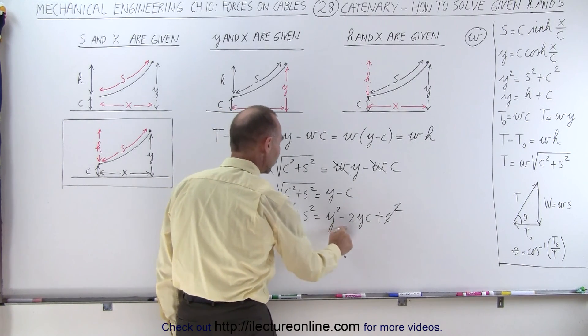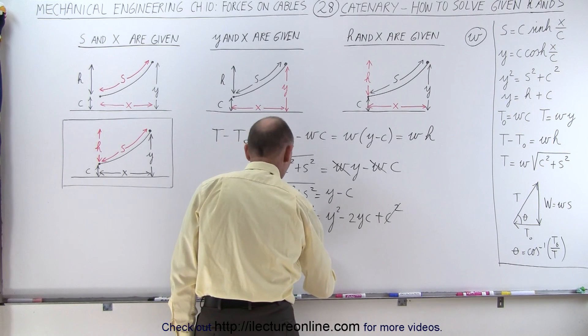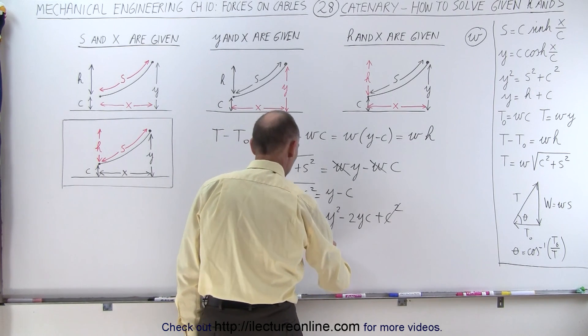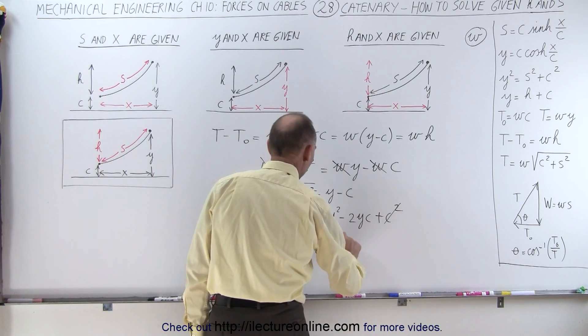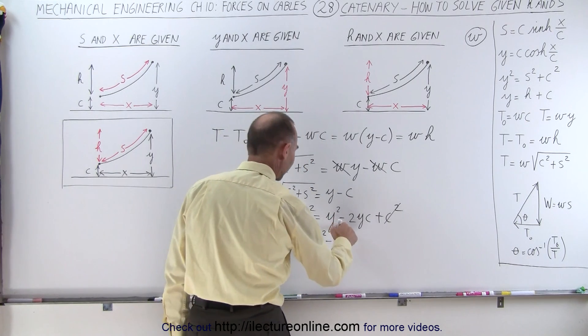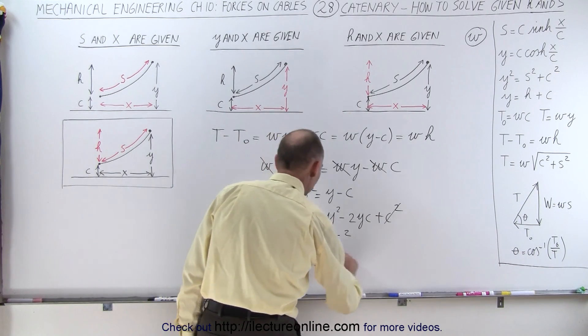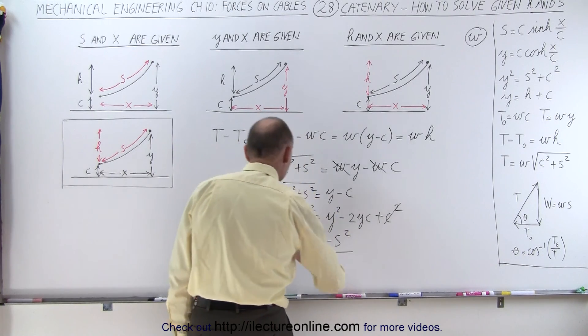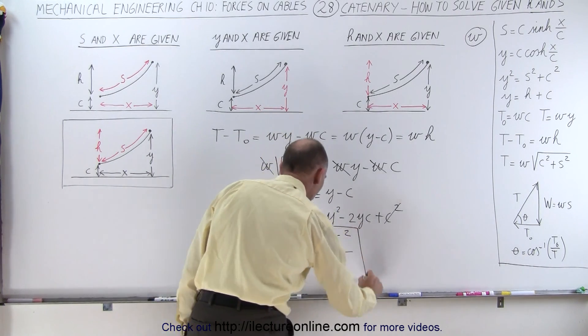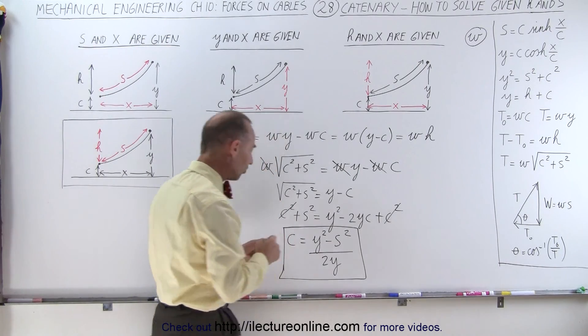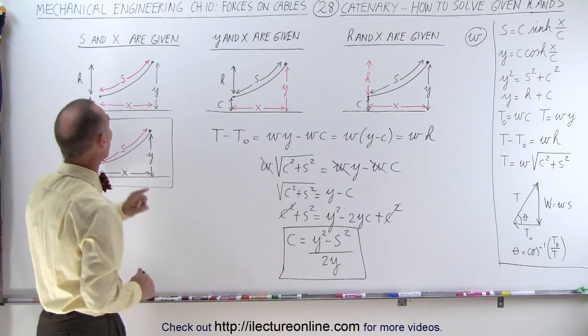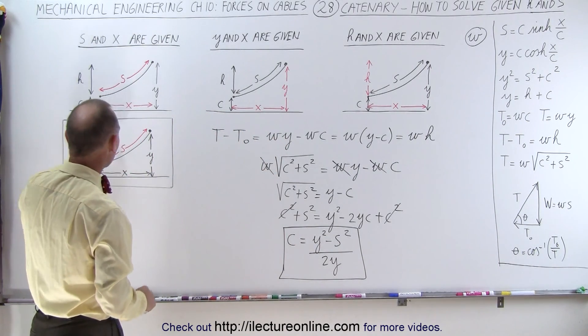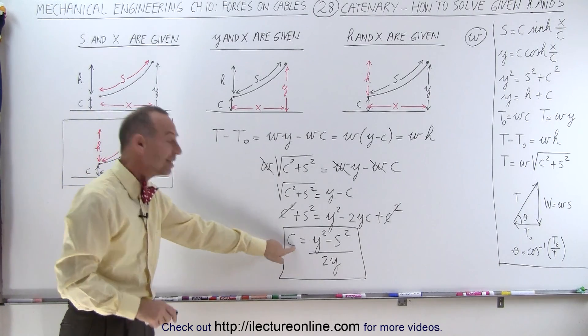If I move this to the other side and move this over here, I can now write that C is equal to Y squared minus S squared. By moving the S squared to the right side, it becomes minus. And then divide both sides by the coefficient of C, which is 2 times Y. And here we now have a new equation to solve for C in the case that we're only given H and S. So then we find C in this fashion.